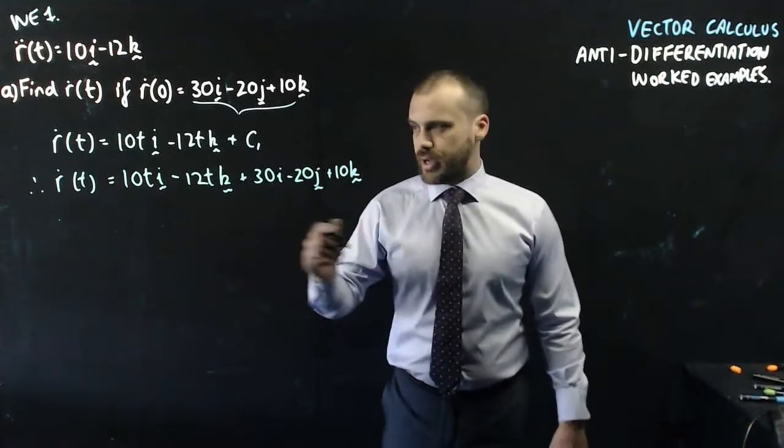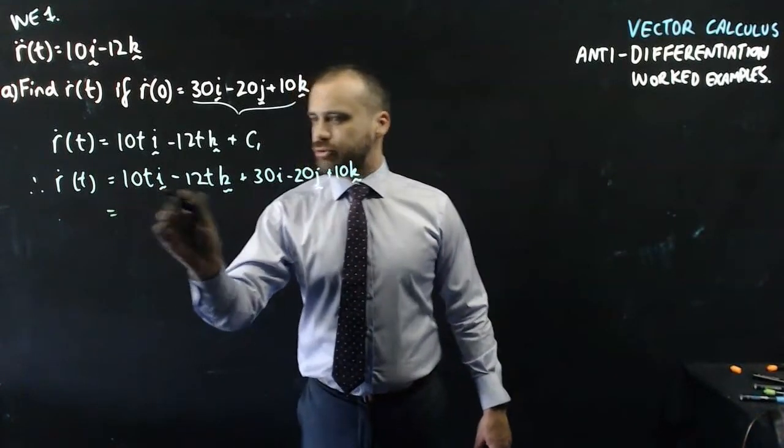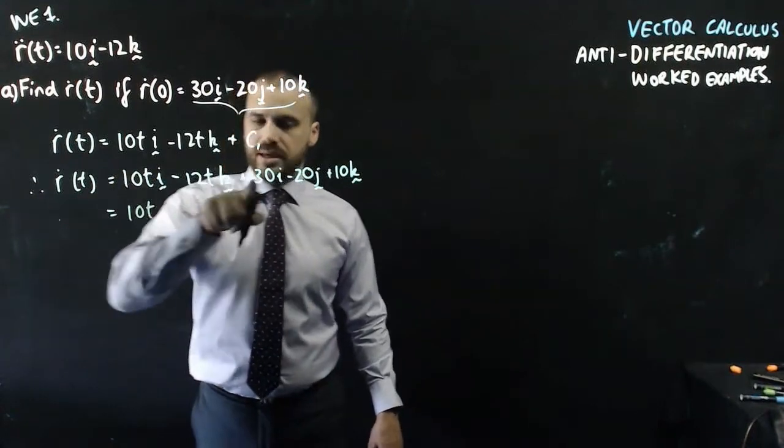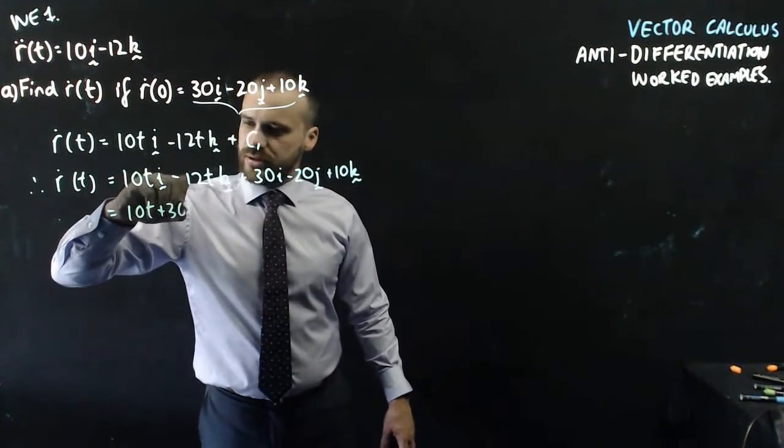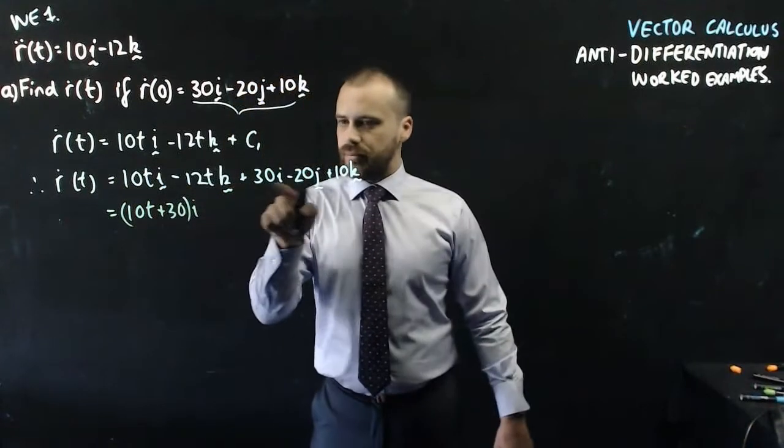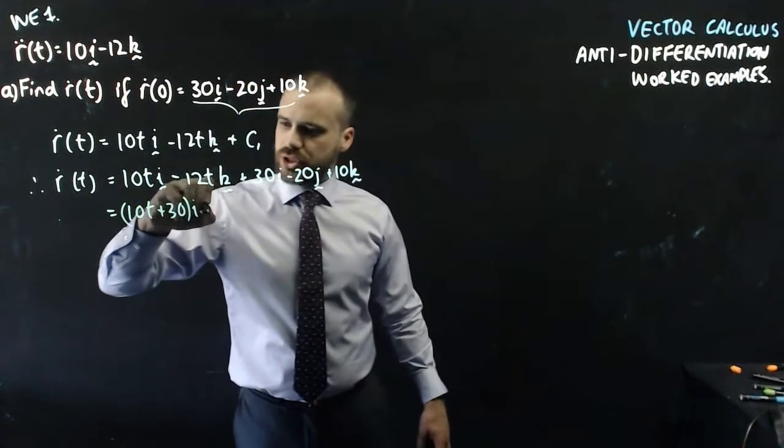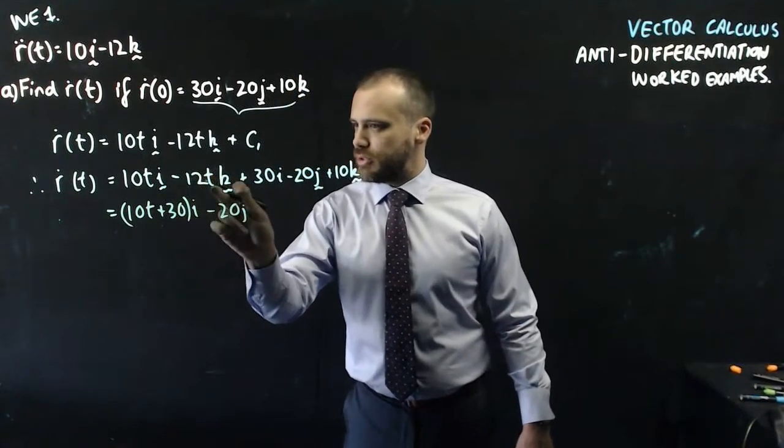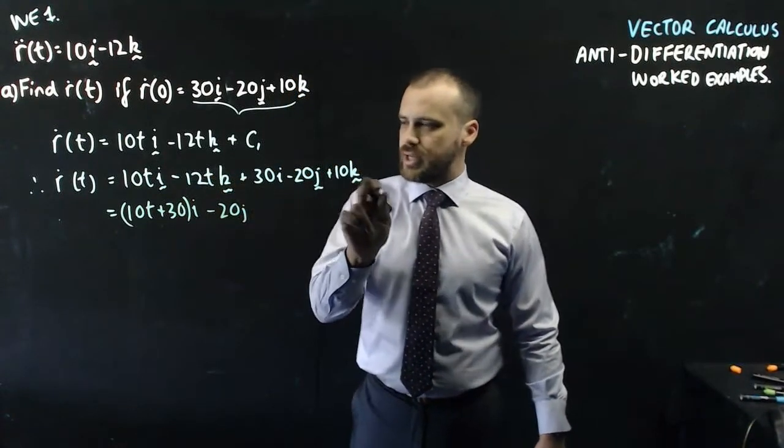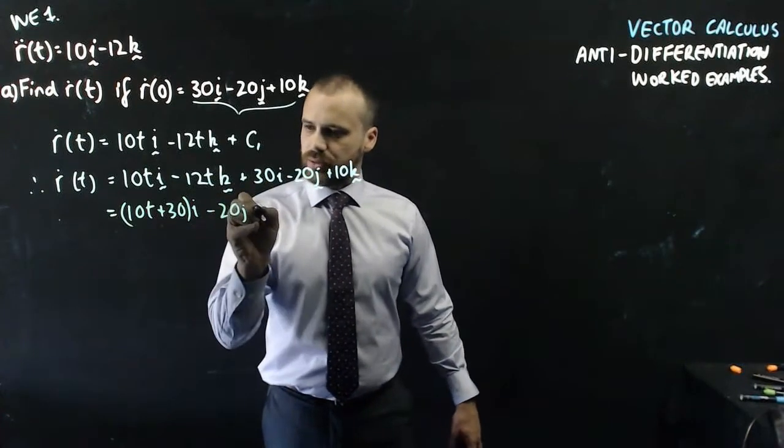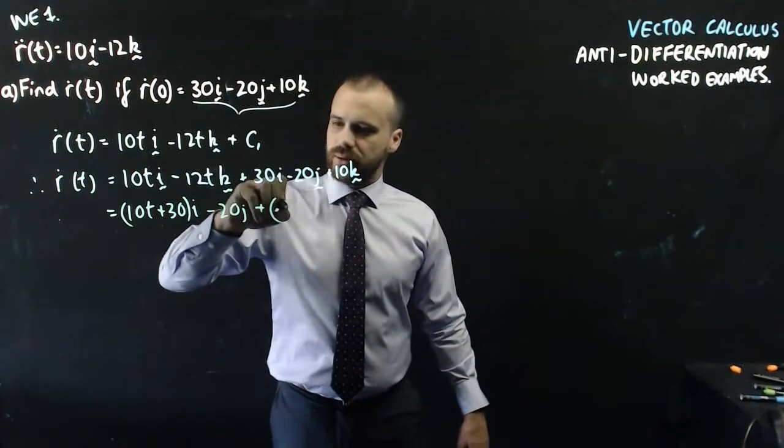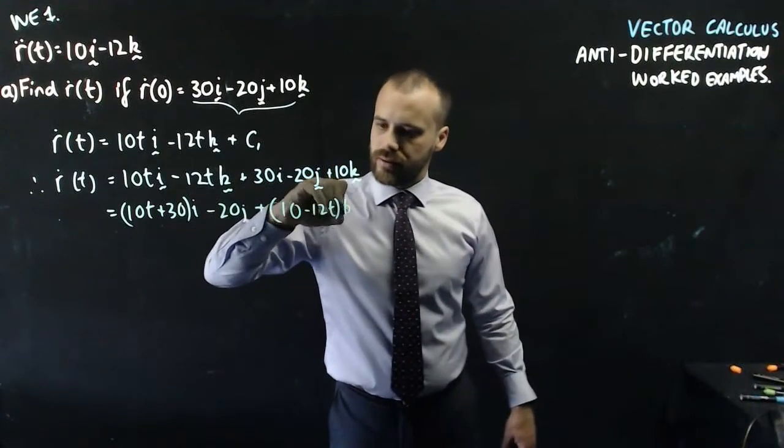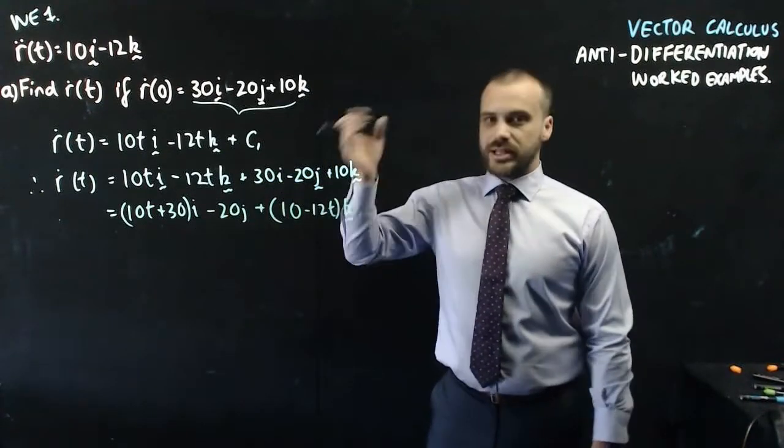But of course we can neaten that up a little bit because now we can group our i components. So we can say 10t plus 30, and that's going to be i. Now we just have a negative 20j there. And then we have negative 12t and plus 10k. So I'll put plus, and let's make it 10 minus 12t, k. All right, so that's r dot t.